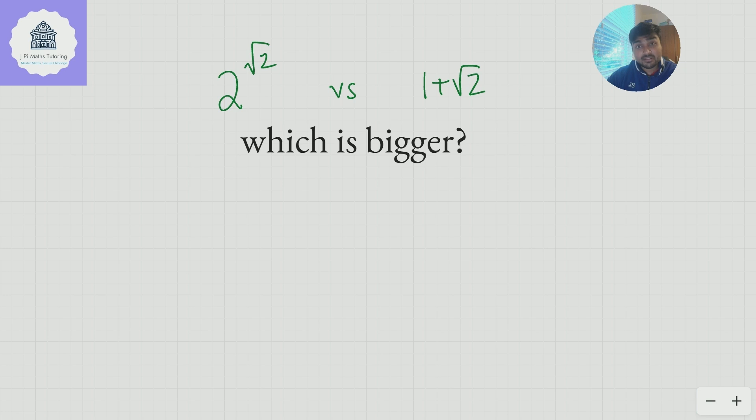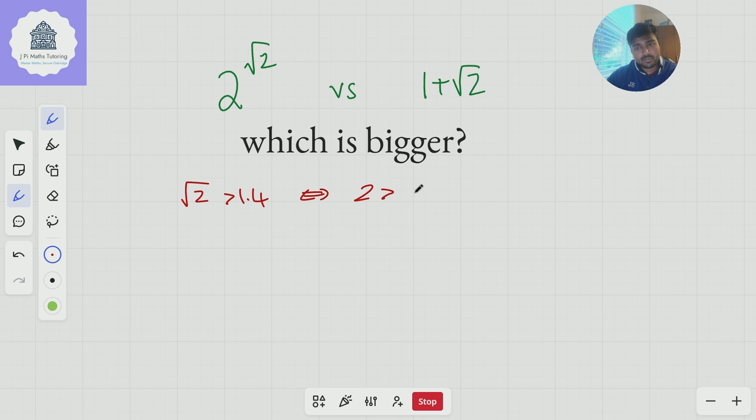...I know is slightly bigger than 1.4, so I can prove that relatively easily. So root 2 is going to be bigger than 1.4, that's true if and only if, if I square both sides, the inequality upholds, so 2 is bigger than 1.4 squared.